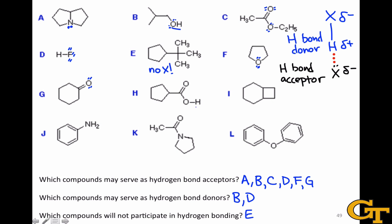Molecule H includes two oxygen atoms as part of a carboxylic acid, and one of those is bonded to a hydrogen. So molecule H can serve both as a hydrogen bond acceptor and a hydrogen bond donor.